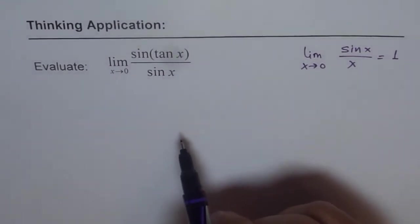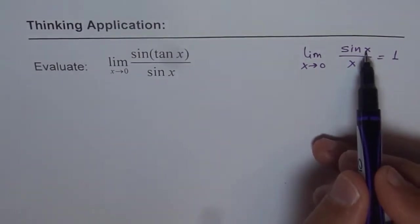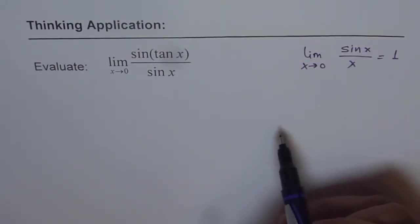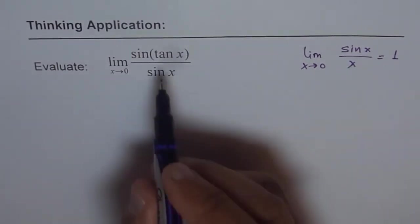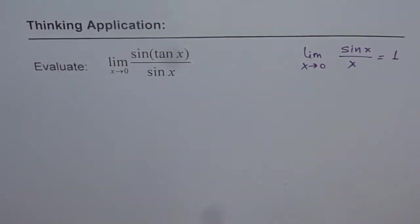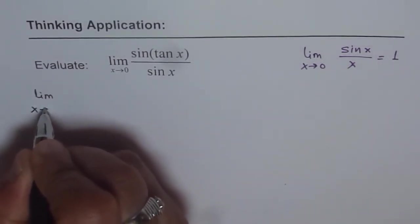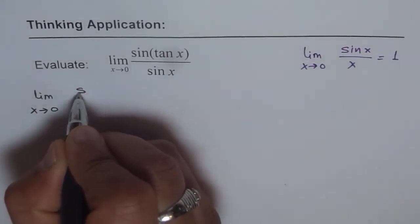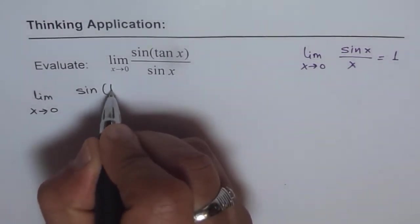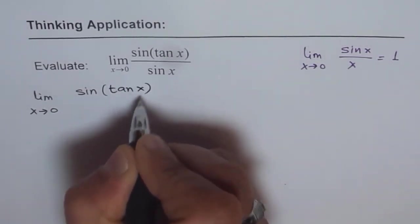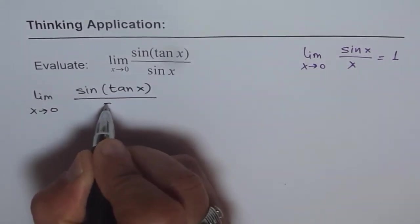Now how do we get in this form? The important thing is these two things should be the same. So let's see how to make them the same. Let's first copy the question and then look at the strategy we adopt. The question is limit as x approaches 0 of sin(tan x) over sin x.